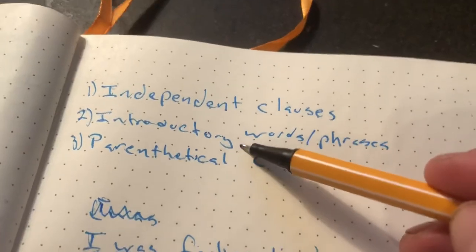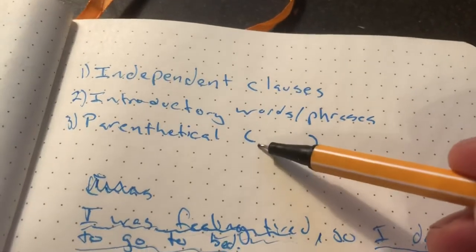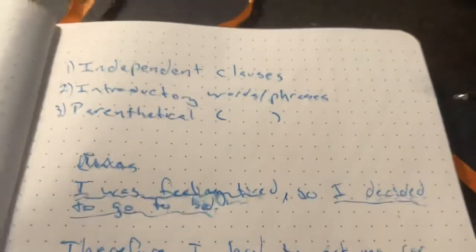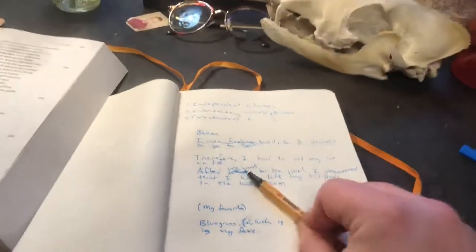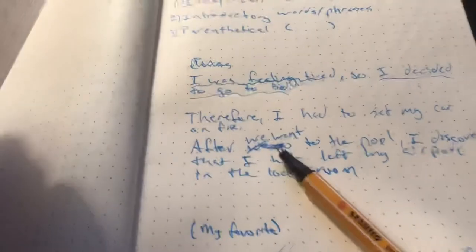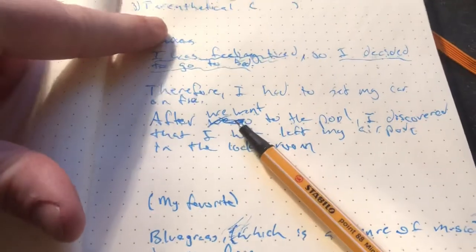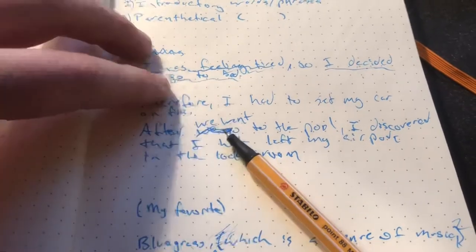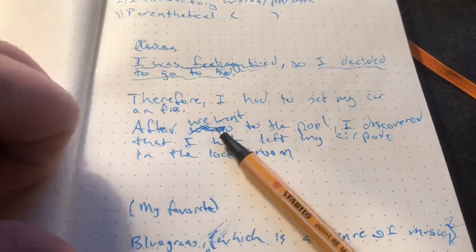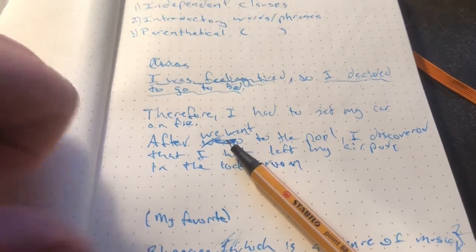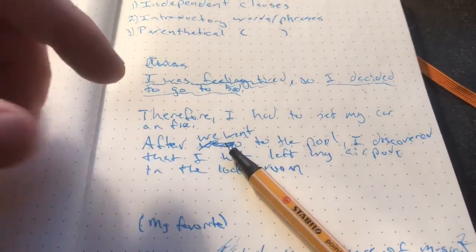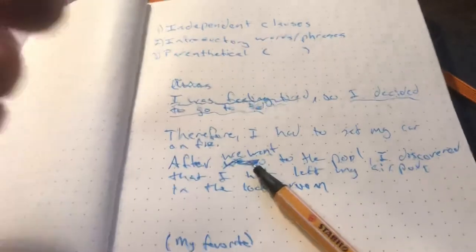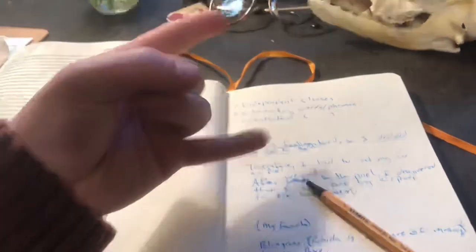So, independent clauses, introductory words and phrases, and parenthetical use of commas. All something that we should be focusing on. Okay. If you have any questions about that, I'll be happy to answer them. And I'll also be making some comments on your papers to help you guys better understand what we're talking about. And, of course, you could Google some of this stuff. But just keep a lookout for using commas. Rock and roll. You guys are awesome.